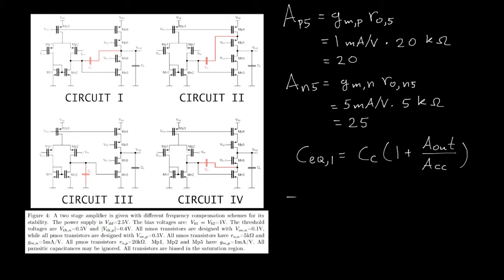So from that, we may conclude that the 3 dB frequency of circuit two is smaller than the 3 dB frequency of circuit four.